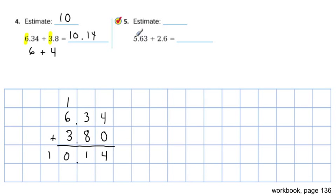All right, the second one, we have 5.63, which is close to 6. And 2.6, which is close to 3. And so our estimate 6 plus 3 would be 9. Now let's go ahead and figure that out. Again, let's find the 1's place. There's the 1's place there. And there's the 1's place there.